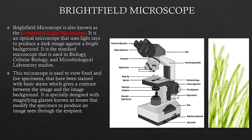We use fixed and live specimens to visualize them. Because the live specimen is also bright and the background is bright, we don't need to stain it if it already has a pigment, because it will be differentiated from the background. So the color in the bright field will be very easy to differentiate. The microscope is specially designed with magnifying glasses known as lenses that modify the specimen to produce an image seen through the eyepiece.